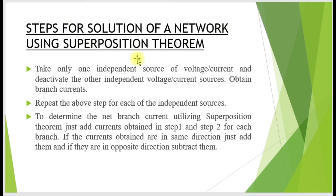Steps for solution of a network using superposition theorem: take only one independent source of voltage or current and deactivate the other independent sources. Then obtain branch currents. If you have both voltage and current sources present, first take the current source and deactivate the voltage source. Voltage sources can be deactivated by removing the source and short-circuiting the respective circuit terminals.